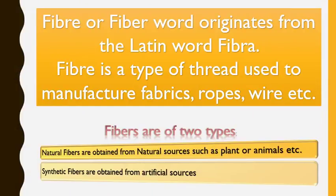We all know that clothes have become an integral part of life. These clothes are made of fabrics, and these fabrics are made of fiber. So it is important for us to know what is a fiber. Before that, we should know where the word fiber originated from. Fiber is a word originated from the Latin word 'fibra,' and fiber is a type of thread which is used to manufacture various types of fabrics,